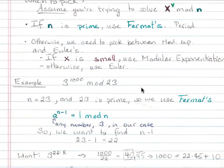First example is we want to solve 3 to the power 1000 mod 23. Now n, remember the modulus, is 23 and 23 is prime, so therefore we're going to use Fermat's. Recall that Fermat's theorem says that a to the n minus 1, remember a is just any number, equals 1 mod n, if n is prime, and our n is.